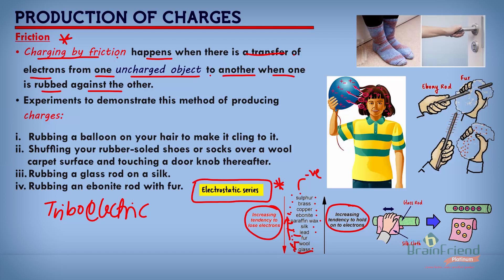As we go up on the list, that tendency reduces. So if we have sulfur interacting with glass, sulfur will strip off electrons from glass and become negative, while our glass, after losing electrons, becomes positive because it will now have more protons.